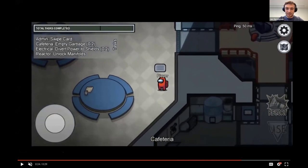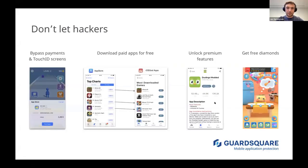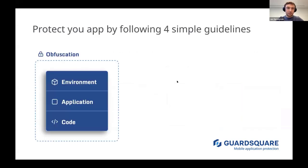Once we're on the left side we can just turn back into being an Among Us human and continue playing. It's actually as easy as that. I'll also cover many other attack techniques: how hackers bypass payments and Touch ID screens, how people download paid apps for free, how people unlock premium features in popular games and apps, and how you can get free diamonds with basic tools available online. I'll show four simple guidelines to protect your app — a secure model with four elements.